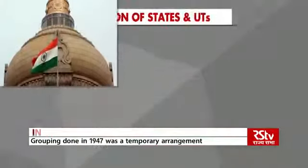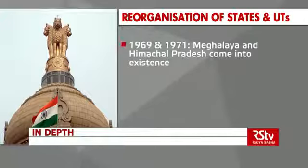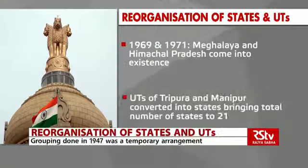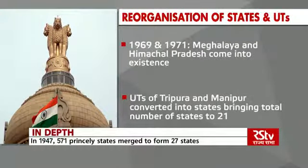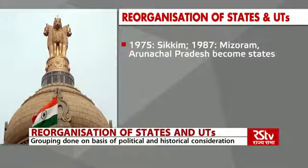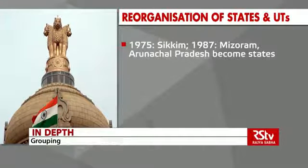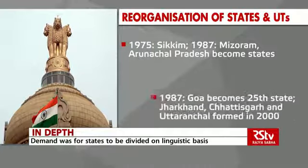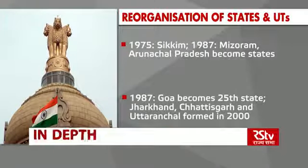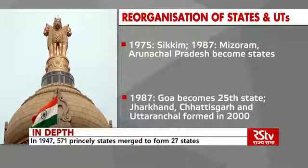In 1969 and 1971, Meghalaya and Himachal Pradesh came into existence. Union territories of Tripura and Manipur were next converted into states, bringing their number to 21. Thereafter, Sikkim in 1975 and Mizoram and Arunachal Pradesh in February 1987 also acquired the status of states. In May 1987, Goa became the 25th state, while Jharkhand, Chhattisgarh and Uttaranchal were formed in November 2000.